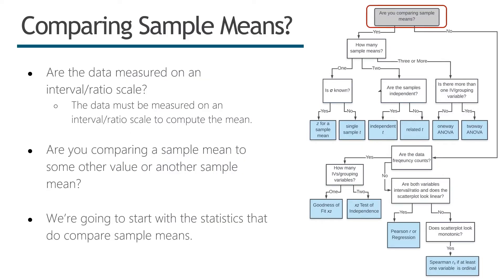Let's start at the very top of the flowchart. The first question asks: are you comparing sample means? When you're reading a research scenario, you have to determine if the data are measured on an interval ratio scale, because that's the only kind of measurement you can use for computing a mean. Your very first step is figuring out whether or not you have interval ratio data where it would actually make sense to compare means.